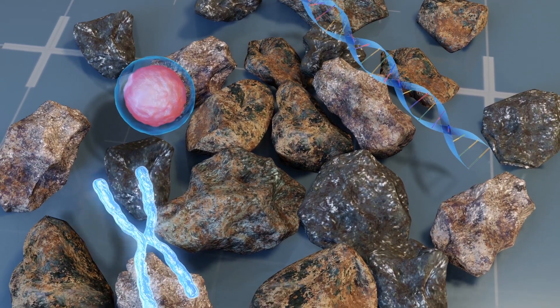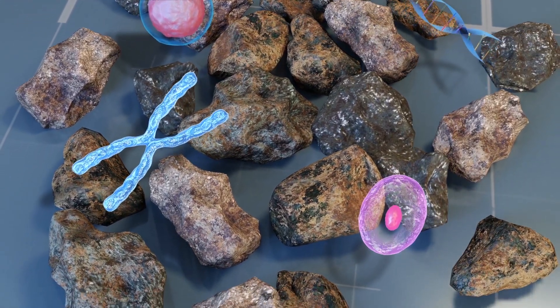researchers also found proteins, chromosomes and cartilage cells among the Hypochrosaurus fossils.